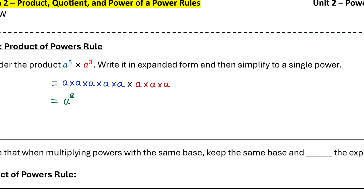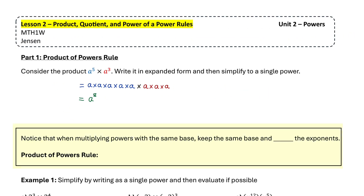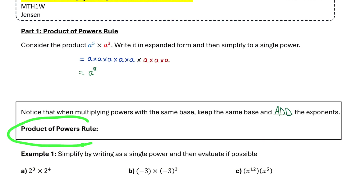So to come up with a general rule for a product of powers: if you're multiplying powers that have the same base, we keep that same base but add the exponents — five plus three is eight. The general rule says: when multiplying powers with the same base, we keep the same base and add the exponents. So a to the power of m times a to the power of n equals a to the power of m plus n.